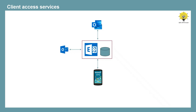There are other services as well that are dependent on client access services — for example, Autodiscover, Free/Busy lookups, and address book. So if client access services are misconfigured in your Exchange Server, users will not be able to access their mailboxes and all these services will not work. In prior versions of Exchange Server like Exchange 2010 or 2013, we used to install the client access server role on a different server or on a different machine. But in Exchange Server 2016 and 2019, the client access server role has been removed and its functionality has been combined with the mailbox server role, and now it is called client access services.